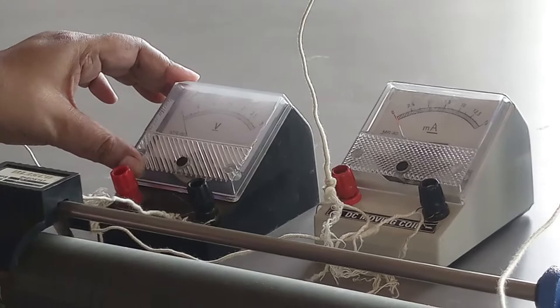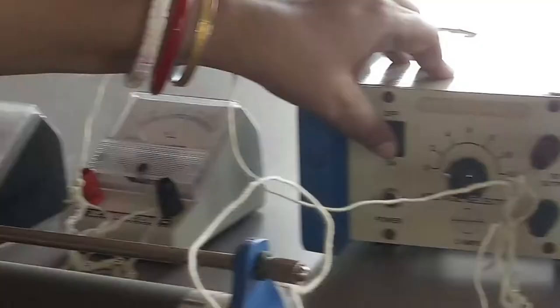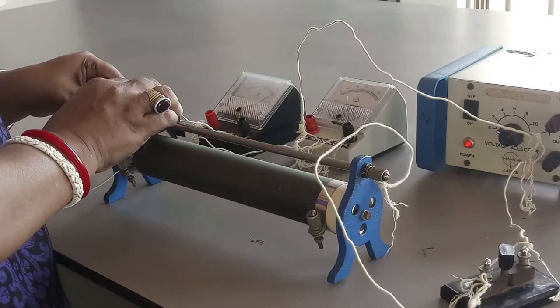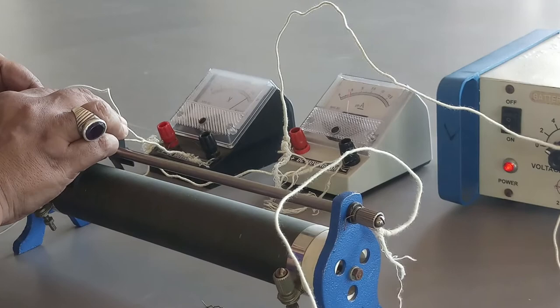Let us start the experiment by putting on the battery eliminator. As we put on the battery eliminator and keep on changing the position of the rheostat, you will find that the position of the ammeter and voltmeter readings keep on changing.